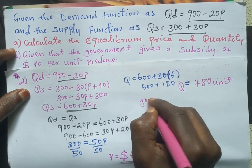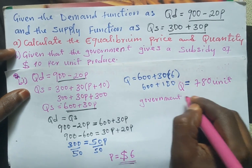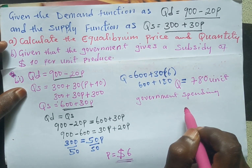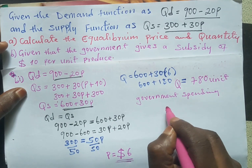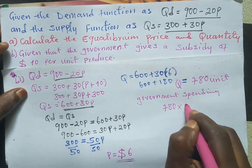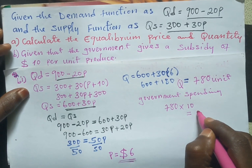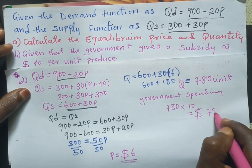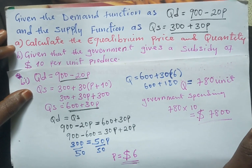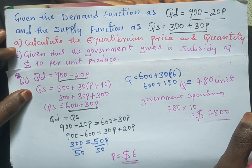The last part asks for government spending. Government spending on subsidies equals the subsidy amount multiplied by the new equilibrium quantity. So we have 780 units × $10, and our government spending is equal to $7,800. That is the value for government spending after giving subsidies to producers.